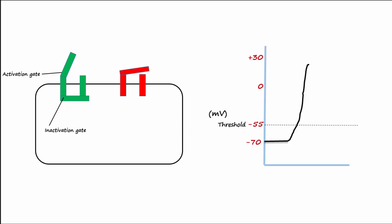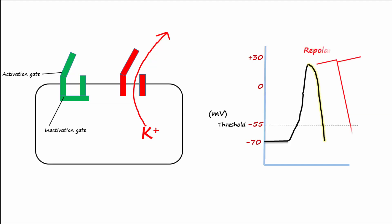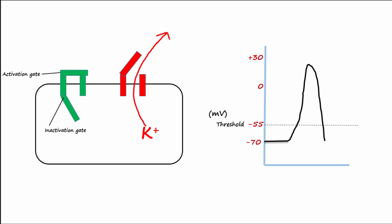At around zero millivolts, near the end of the depolarization phase, the inactivation gate closes, so sodium can no longer enter the cell. By this time, the potassium voltage gate is fully open and lots of potassium goes down its gradient and leaves the cell. As the positively charged potassium leaves, the membrane potential becomes more negative. This phase of the action potential is called the repolarization phase. After repolarization, the sodium voltage gates return to their original resting configuration — the activation gate is closed and the inactivation gate is open. Hyperpolarization is the inside of the cell becoming even more negative than minus 70 millivolts due to the potassium channels closing slowly.